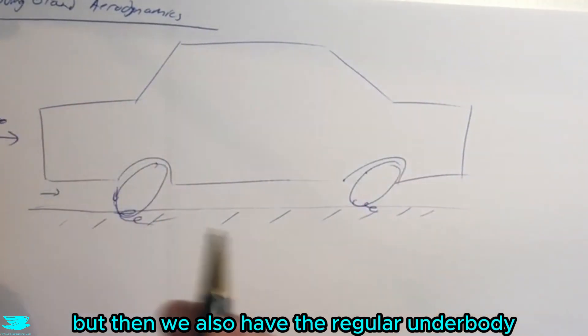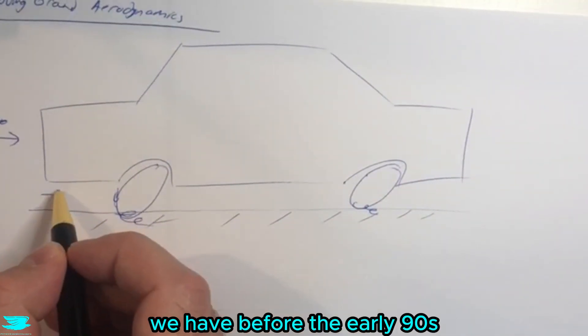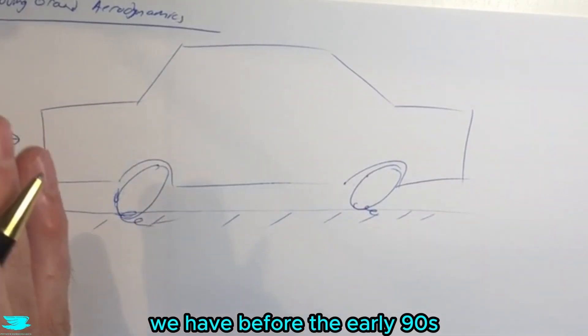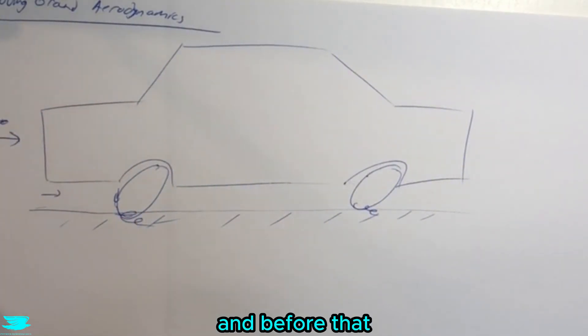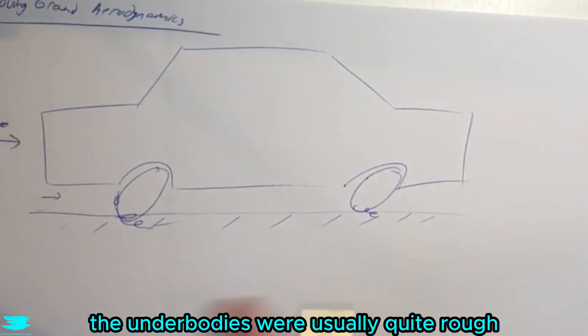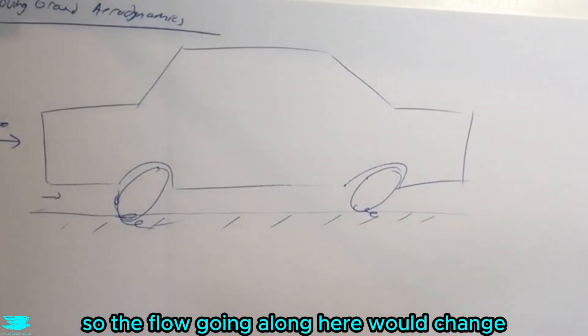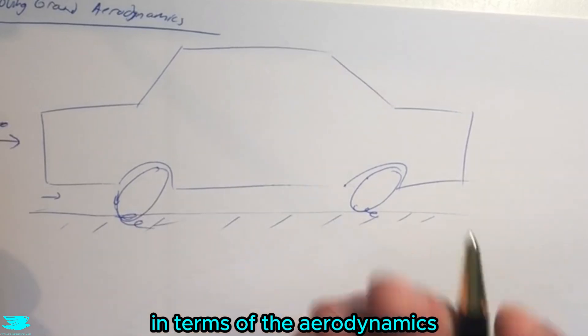So rotating wheels are not occurring, those aerodynamics are different there as well. But then we also have the regular underbody. Back in the pre-90s and before that, the underbodies were usually quite rough, so the flow going along here would change in terms of aerodynamics.